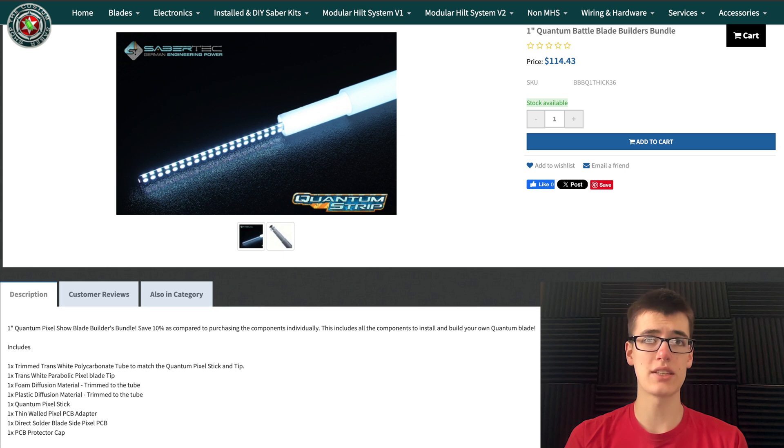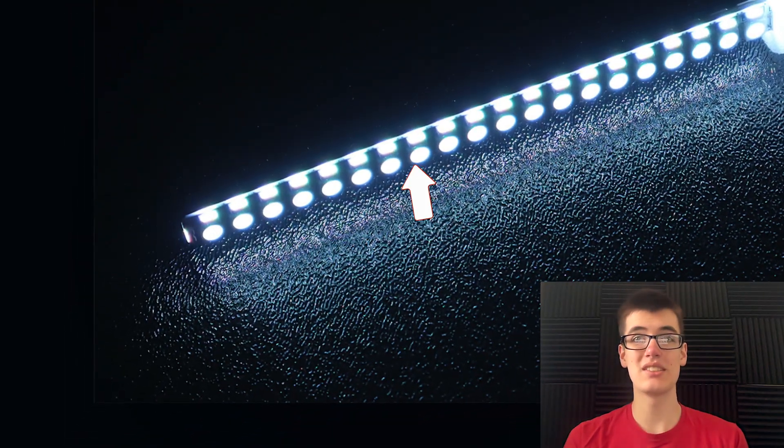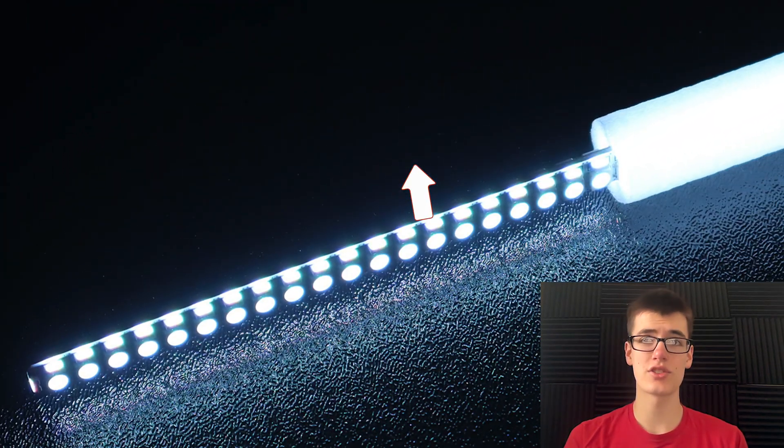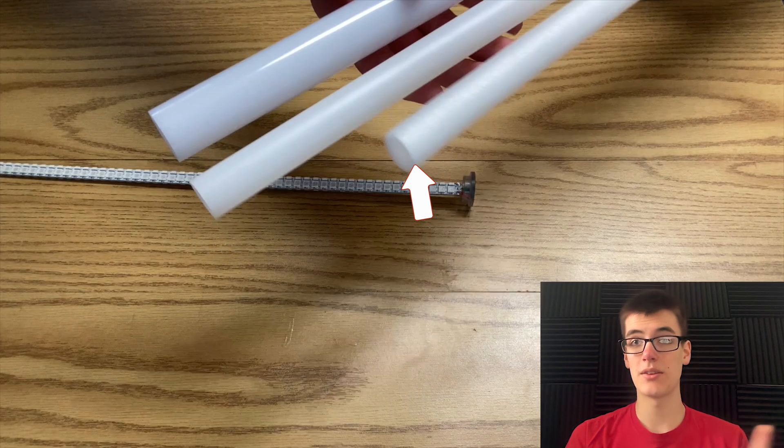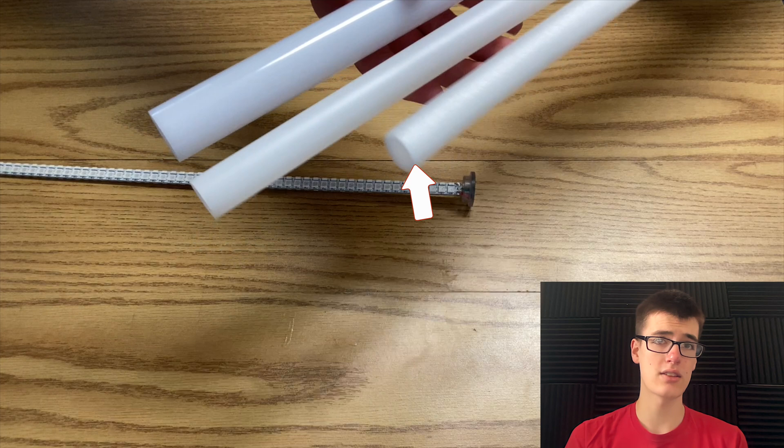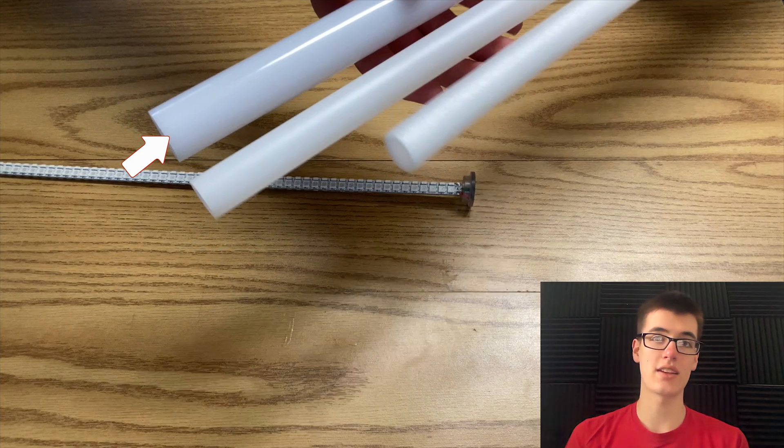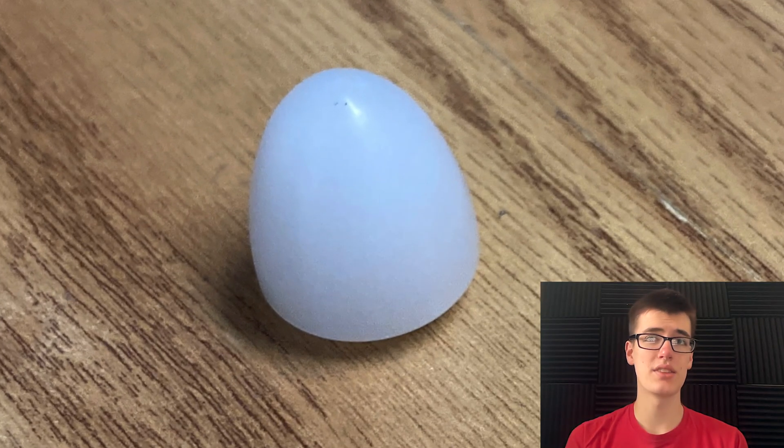Either way, you should end up with this amazing PCB with LEDs facing not just two directions, but all four directions, thanks to these little sideward-facing LEDs. A foam tube, which you'll put over that. A plastic diffusion tube, which will go over that. And then the actual plastic of the blade, which will go over that. And also a blade tip that's hollowed out so the LEDs can slide into it.